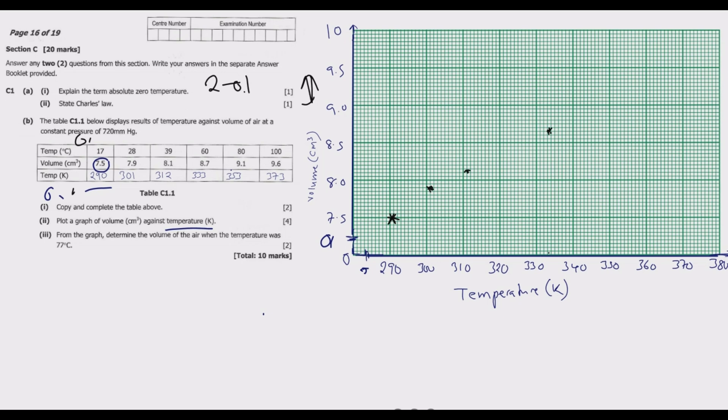Then we go to 353, 9.1. So 353, 9.1. 9.1 will be two units above. So we have 1, 2, 3. It will be somewhere there. Then we have 373, 9.6. So 373 is three units, then 9.6 will just be one point above. So 1, 2, 3. It will be somewhere there.